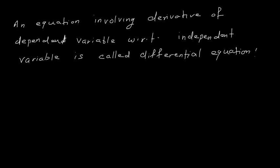What is dependent variable and what is independent variable? We have seen equations like y = x² + 2x + 7. Here y depends on the value of x — I change x and accordingly y changes. So x is called the independent variable and y is called the dependent variable because the value of y depends on x.